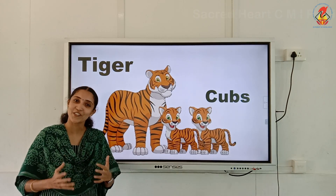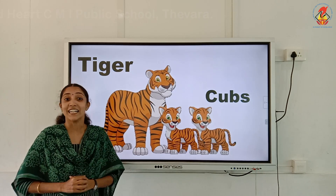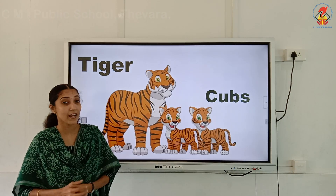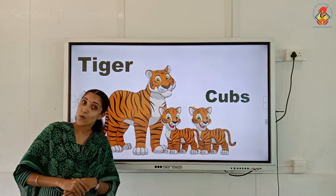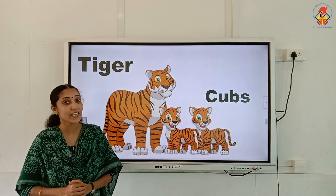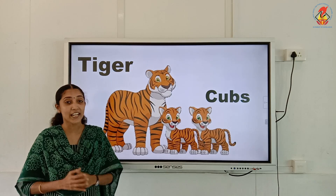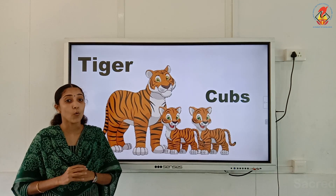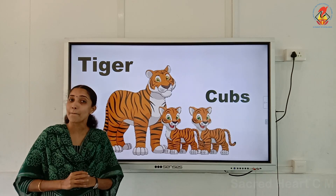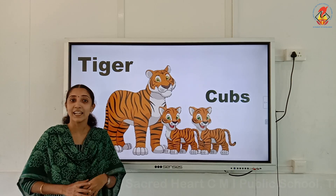Next you can see a tiger with its young one. Tiger is a wild animal and the babies are called cubs. And what does the tiger say? A tiger roars! A baby tiger is called a cub and the tiger roars. Similarly, the young ones of lion, wolf, bear, fox, panda, and leopard are also called cubs.